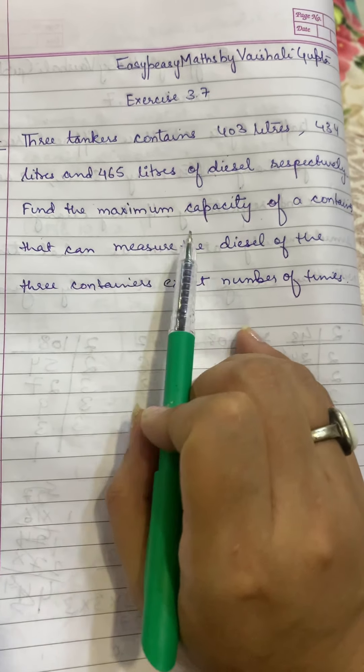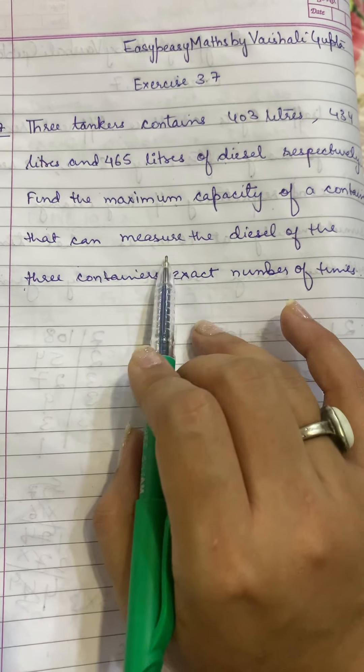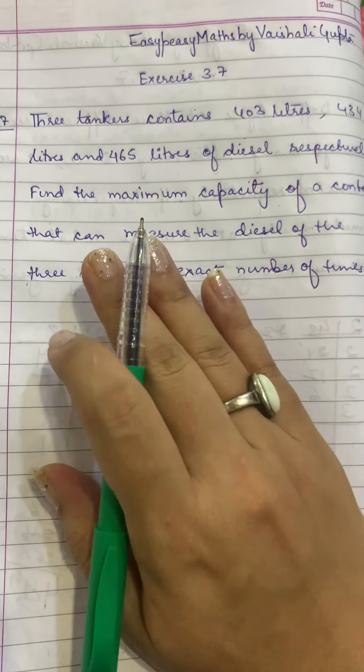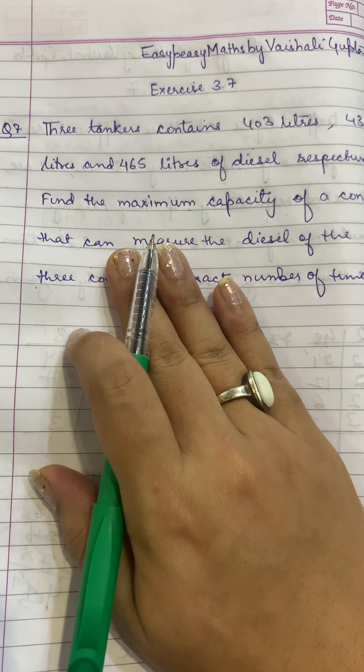Find the maximum capacity of a container that can measure the diesel of the three containers exact number of times. This question we have done a lot of times.